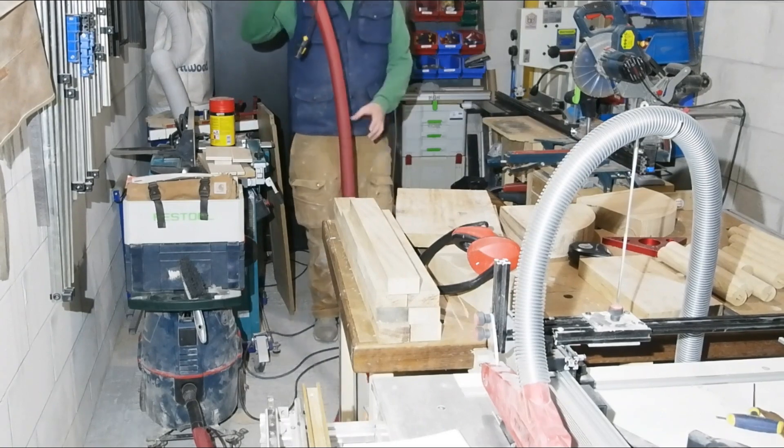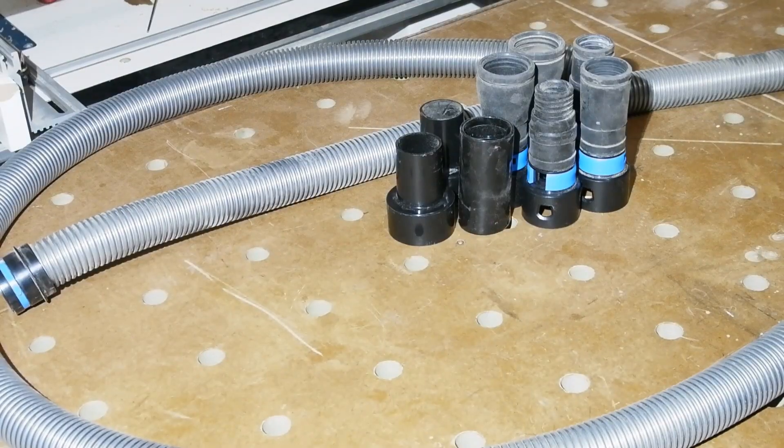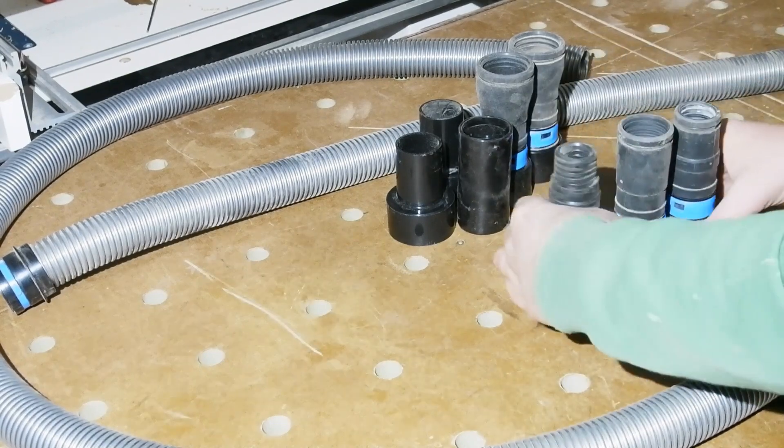The Bosch vac, like most trade type vacs, did come with a power tool adapter, but didn't really fit my router table hose well, nor the table and bandsaws.